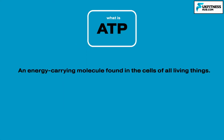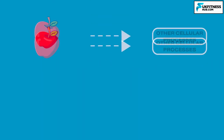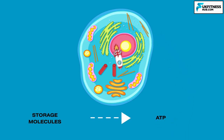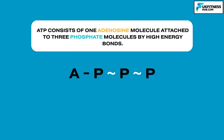ATP is an energy-carrying molecule found in the cells of all living things. ATP captures chemical energy obtained from the breakdown of food molecules and releases it to fuel other cellular processes. When energy is needed by the cell, it is converted from storage molecules into ATP. The ATP then serves as a shuttle, delivering energy to places within the cell where energy-consuming activities are taking place. ATP consists of one adenosine molecule attached to three phosphate molecules by high-energy bonds. Energy bonds are represented by the squiggly lines you can see on screen — these are important as it is these bonds where energy is stored.